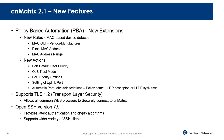We will support TLS 1.2 and 2.1, which allows all common web browsers to securely connect to CN Matrix. We have also migrated to OpenSSH version 7.9, providing the latest authentication and crypto algorithms, which supports a much wider variety of SSH clients.